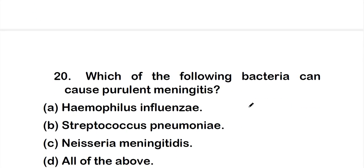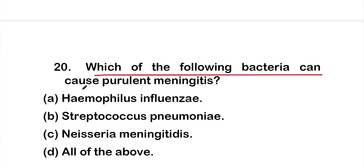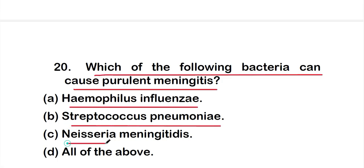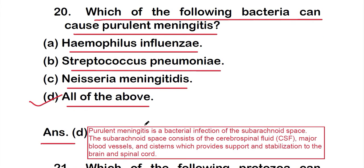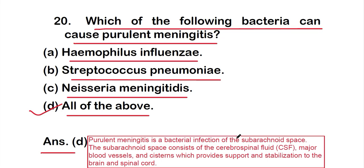Question 20: Which of the following bacteria can cause purulent meningitis? Options: option A: Haemophilus influenzae; option B: Streptococcus pneumoniae; option C: Neisseria meningitidis; option D: all of the above. The right answer is option D. Purulent meningitis is a bacterial infection of the subarachnoid space, which consists of cerebrospinal fluid, major blood vessels, and systems that provide support and stabilization to the brain and spinal cord. These are all 20 questions of part one on medical microbiology.